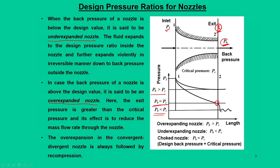When the back pressure of the nozzle is above the design value — that is, above Pc — it is said to be an over-expanded nozzle. In this case the exit pressure is greater than the critical pressure. The net effect is to reduce the mass flow rate through the nozzle. This over-expansion concept is more relevant when dealing with convergent-divergent nozzles.